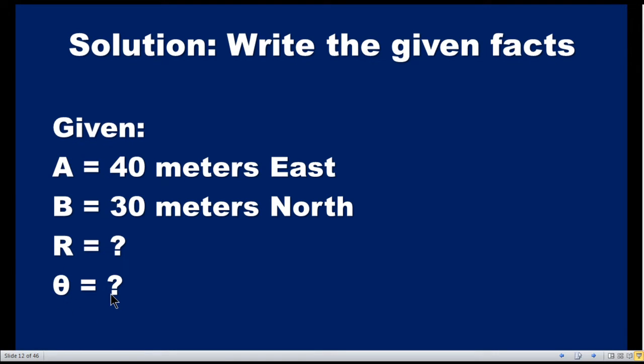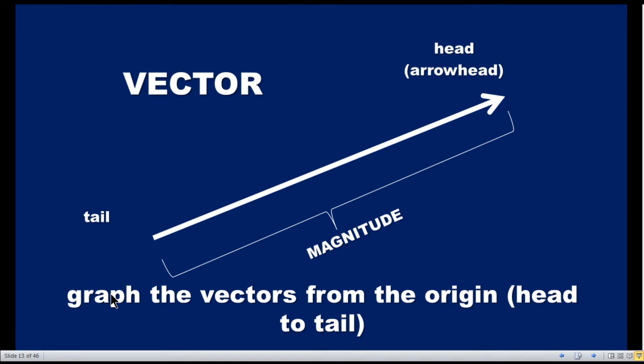Now we can draw the vector. A vector is indicated with an arrowhead. This is the tail and this is the head. The magnitude of this vector is the arrowhead length.